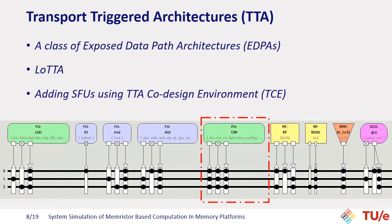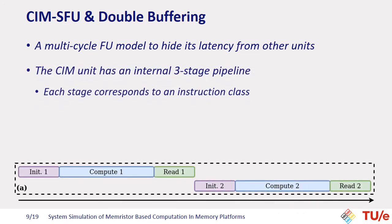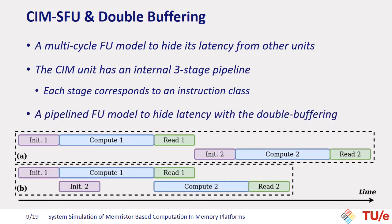We integrated our special unit using the TTA co-design environment, which is an open-source toolset for customizing TTA. The special SIM unit model is a multi-cycle functional unit that should be modeled in a manner such that its latency is hidden from other functional units. The SIM unit has a three-stage unbalanced internal pipeline, where each stage corresponds to an instruction class. To hide latency, we introduce another set of data registers to benefit from double buffering — the next vector to be processed is preloaded while the SIM unit is still computing the current vector.